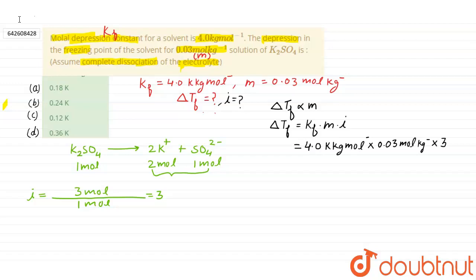First, we cancel out units: kilogram cancels with kilogram inverse, mole cancels with mole inverse and we get only Kelvin. Our answer is ready. 4 into 0.03 into 3 Kelvin, which is 0.36 Kelvin.